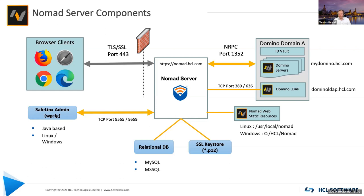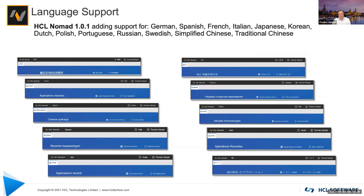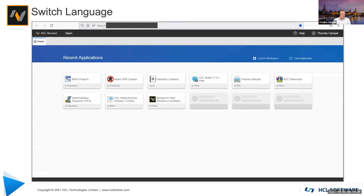It probably sounds complicated but in fact it just takes a couple of minutes to get everything up and running. We launched Nomad for web browsers in May this year, and version 1.0.1 was just released in September. One improvement in 1.0.1 is extended language support — version 1.0 was English only, but version 1.0.1 adds 13 more languages to make it a truly internationalized product. You don't have to decide which language to install — it's completely seamless to end users.